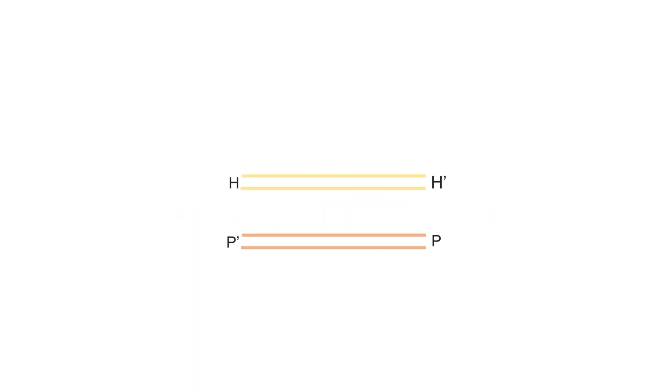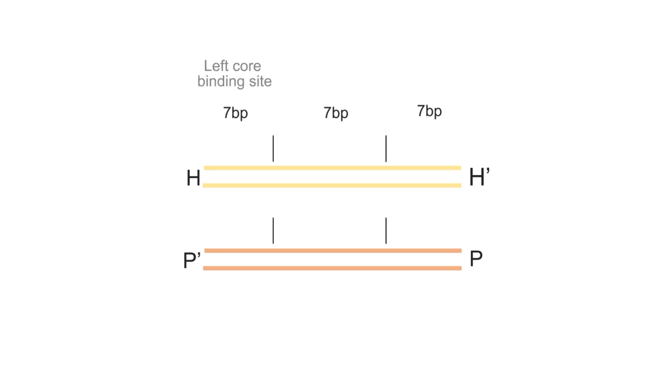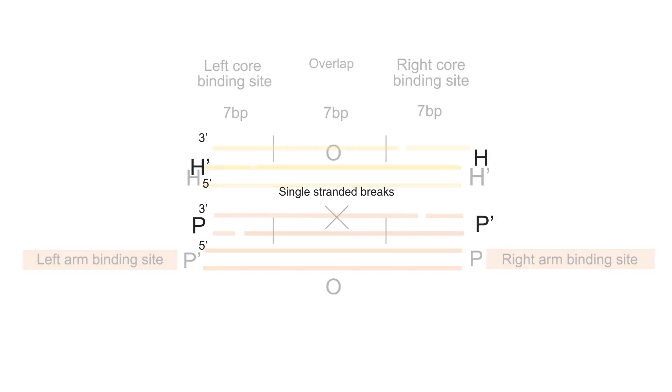Let's zoom in to the recombination between attH and attPH sites. These sites comprise a 21 base pair sequence with a left-core binding site, an overlap, and a right-core binding site. The attP sequence is also flanked by around 230 base pair left and right-arm binding sites for integrase to bind.